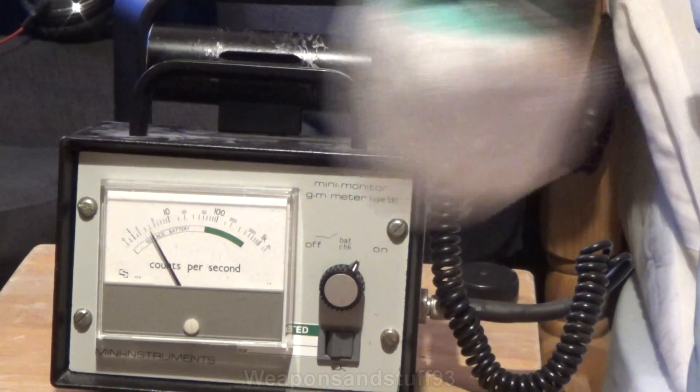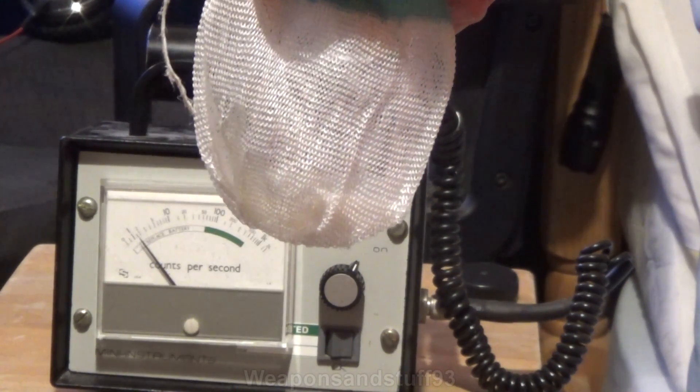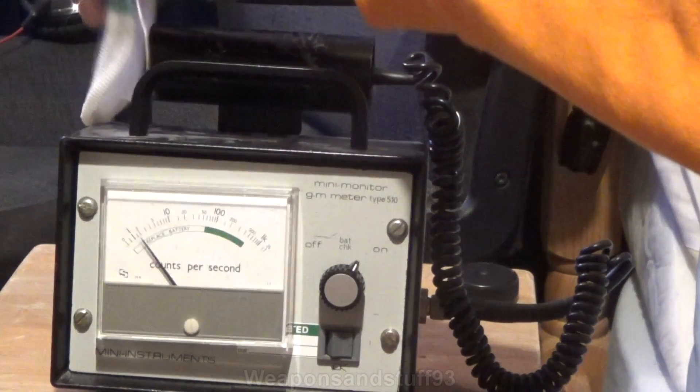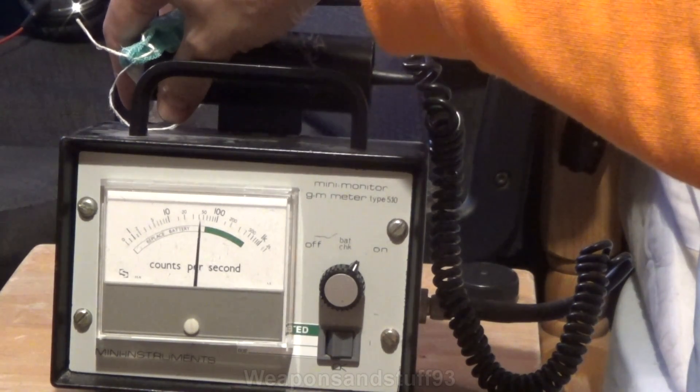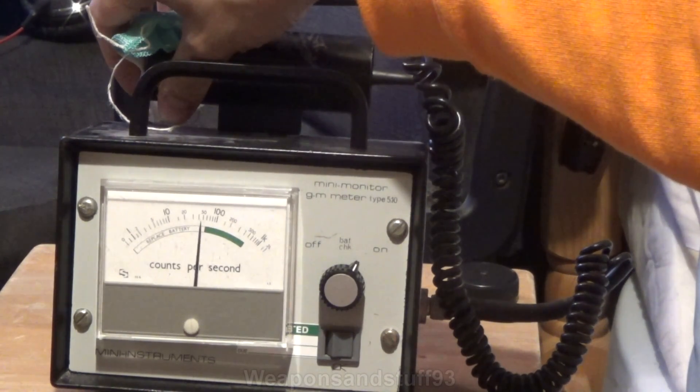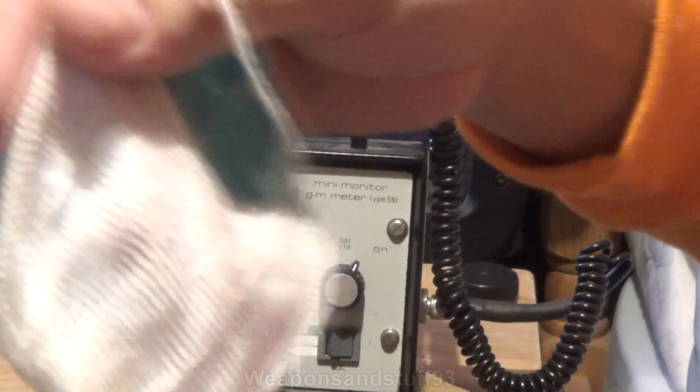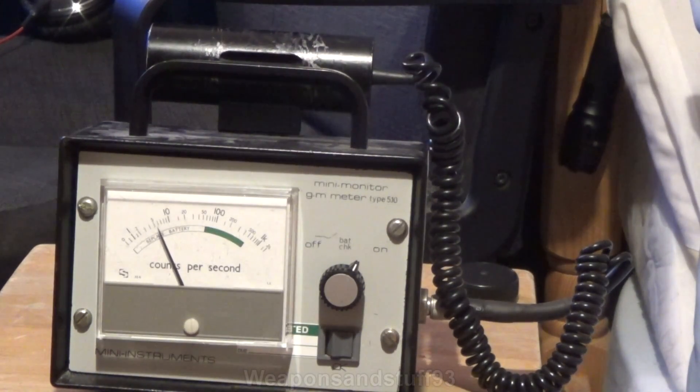Now for the thorium lamp mantle. These used to be used on lamps, I think some lamps still use them. Apparently when it burns, it creates quite a lot of glow light coming off of this. This is more radioactive, getting up to about 50 counts per second from the thorium lamp mantle. If you've got an old lamp in your house, you might actually have one of these.